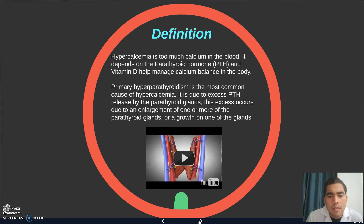Definition: Hypercalcemia is too much calcium in the blood. It depends on parathyroid hormone and vitamin D to help manage calcium balance in the body. Primary hyperparathyroidism is the most common cause of hypercalcemia. It is due to excess PTH released by the parathyroid glands.